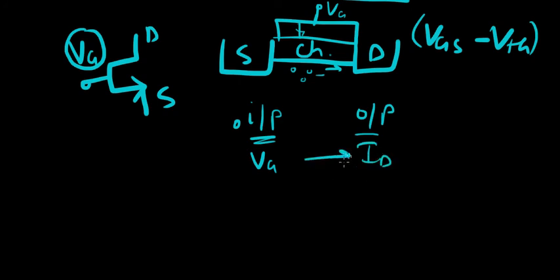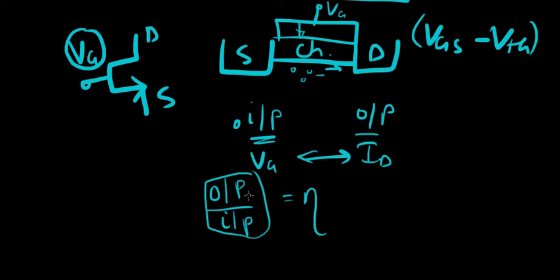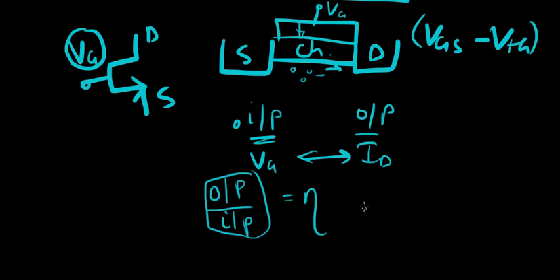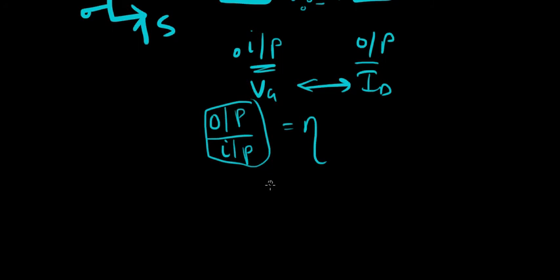Now that you know input and output, you would also like to know how much output is received or obtained for a given input. Correct? What is this output over input ratio called? It's called efficiency of any device. Likewise, for our MOSFET, we're going to define an efficiency parameter and that is called transconductance.